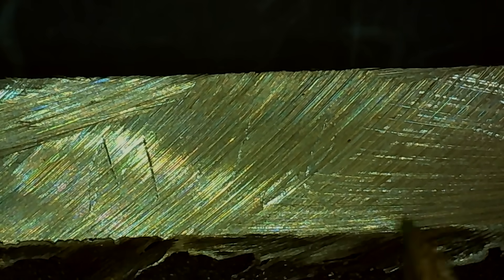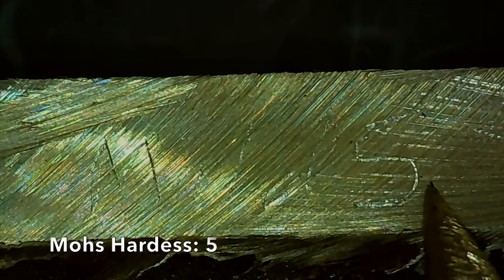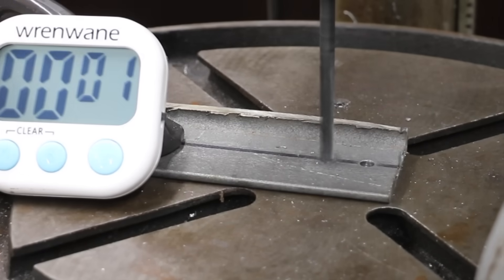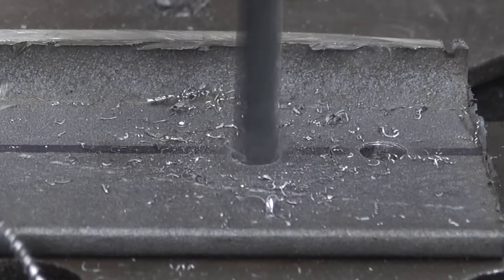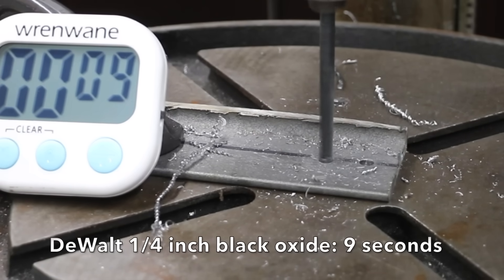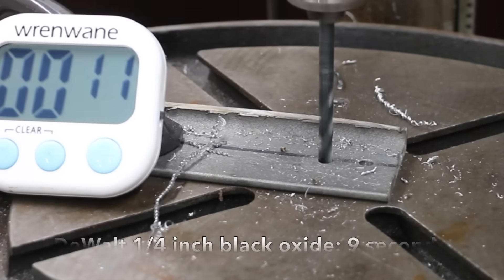While the Mohs hardness test is not the gold standard for testing metal hardness, it'll provide us with some great information. In the first test, we'll be cutting through a quarter-inch piece of mild steel. Okay, 9 seconds for the Dewalt drill.